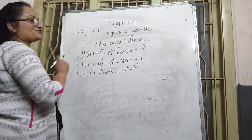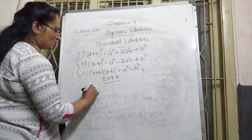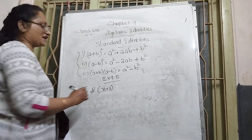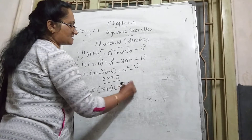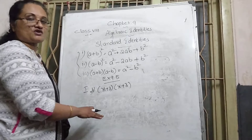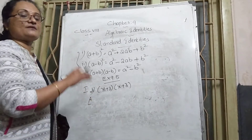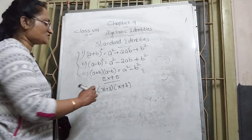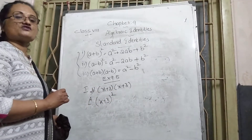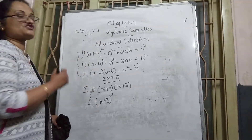Now, Exercise 9.5. The first question says: find the value using a suitable identity for (x + 3)(x + 3). Here two brackets are there. What is special about these two brackets? Both are the same — variable x is the same, and number 3 is the same in both brackets. They are repeated two times.